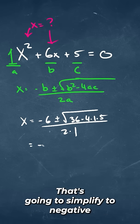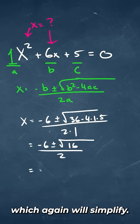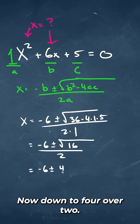That's going to simplify to negative 6 plus or minus the square root of 16, all over 2, which again we'll simplify now down to 4 over 2.